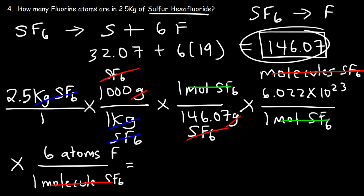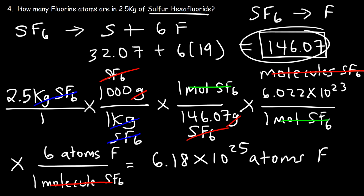So now we can get the answer. It's 2.5 times 1,000, divided by 146.07, times 6.022 times 10 to the 23, times 6. So the answer is 6.18 times 10 to the 25 atoms of fluorine.